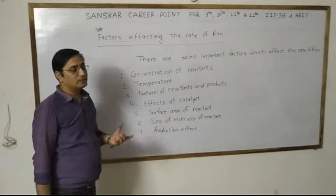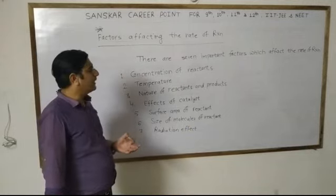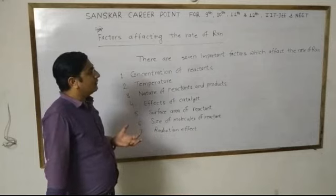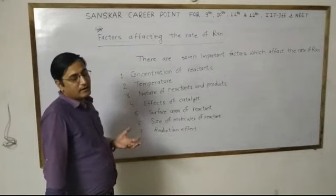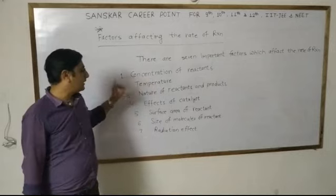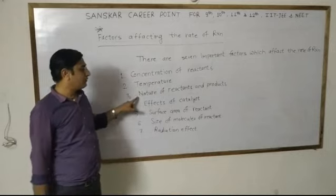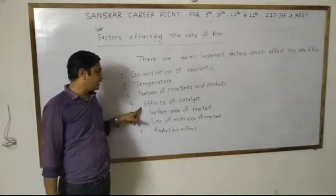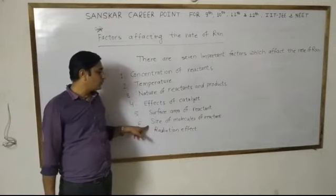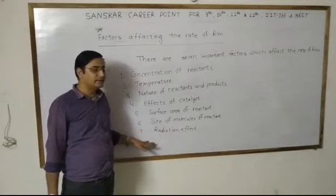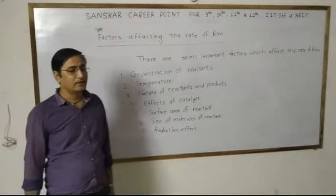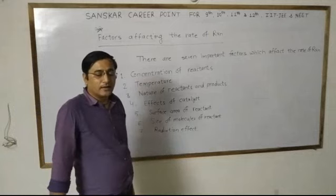This question will be asked in the exam: how many factors affect the rate of reaction? Name them. Answer: concentration of reactants, temperature, nature of reactants and products, effect of electrolytes, surface area of reactant, size of molecules of reactant, and radiation effect — 7 factors in total.